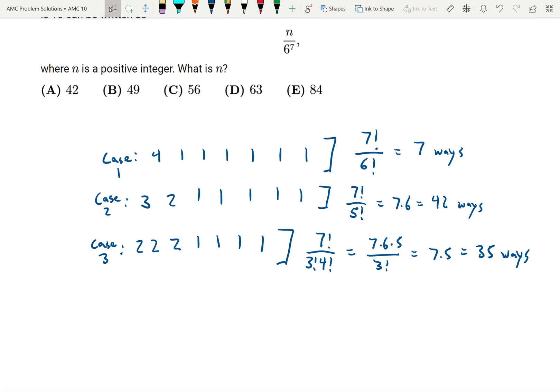So n is just going to be the sum of all these ways. 7 plus 42 plus 35, we get 84 ways. So n is equal to 84, so the answer is choice E.